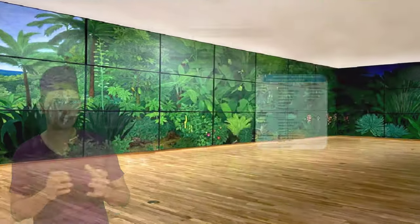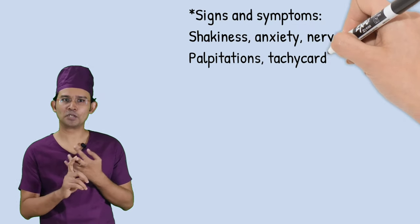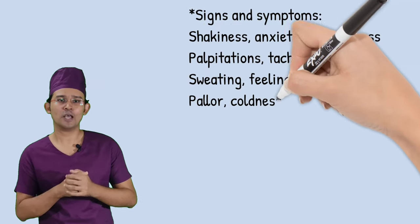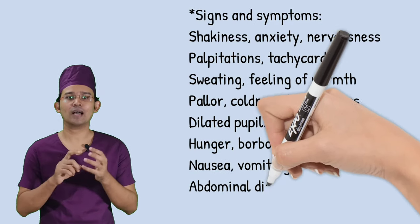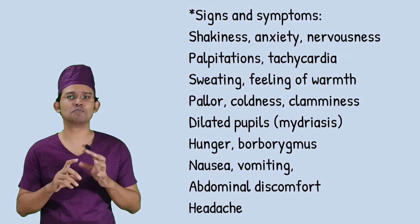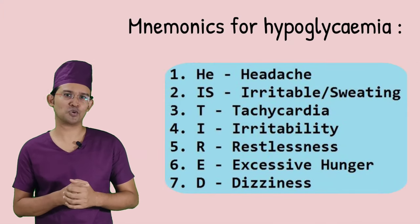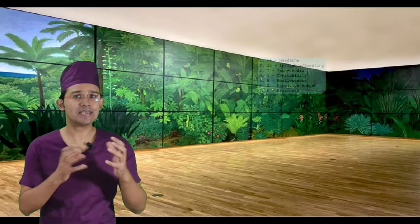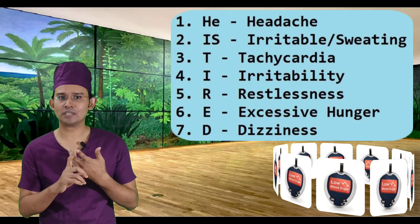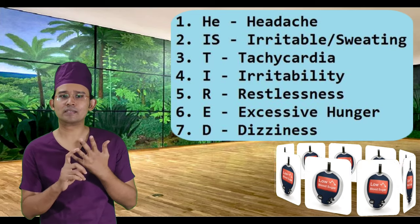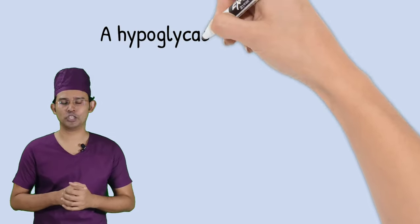Signs and symptoms of hypoglycemia include anxiety, nervousness, palpitations, tachycardia, sweating, pallor, coolness, dilated pupils, hunger, nausea, vomiting, abdominal discomfort, and headaches. A useful mnemonic to remember these is 'HE IS TIRED': H for headache, E for excessive hunger, I for irritability, S for sweating, T for tachycardia, I for irritability, R for restlessness, E for excessive hunger, D for dizziness.